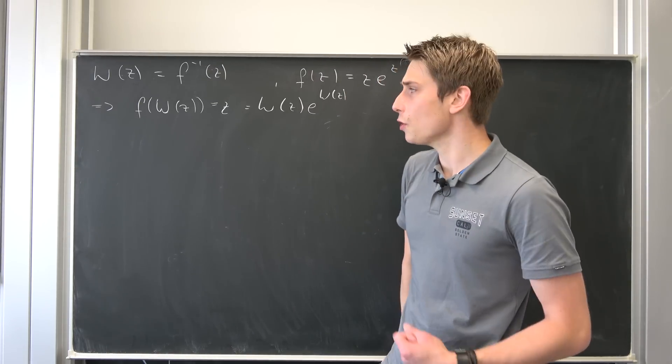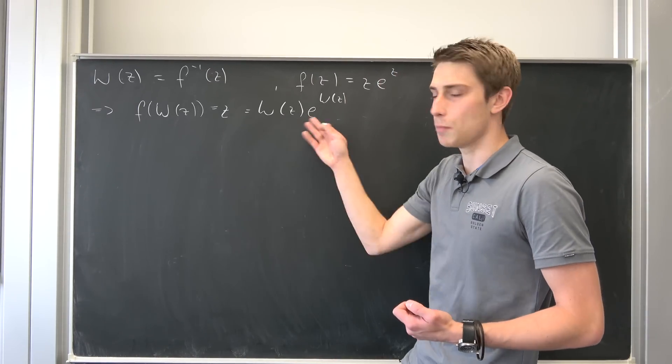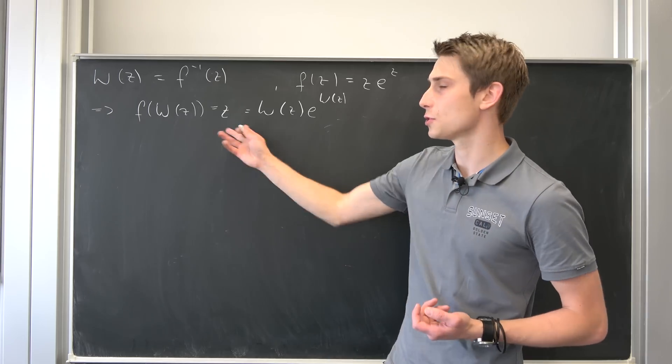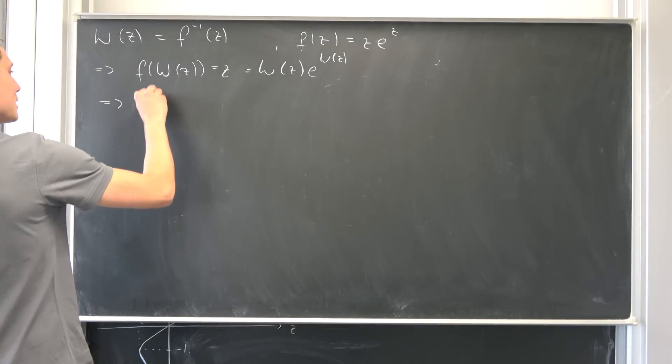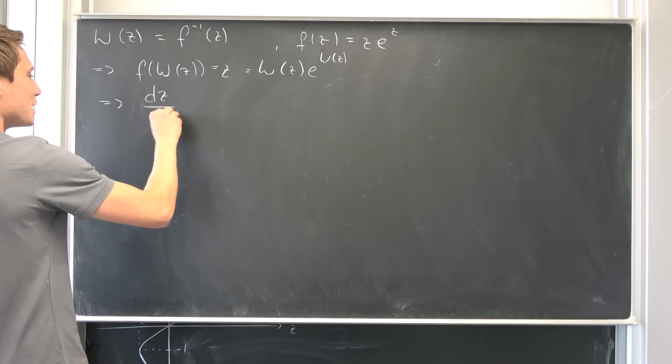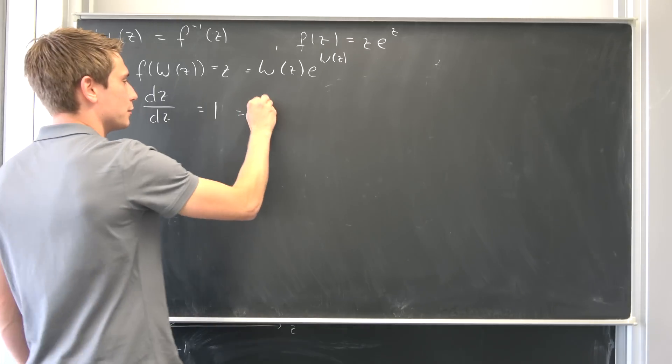And just like I said before, we would like to do implicit differentiation. That means differentiating both sides with respect to z. So the z differentiated with respect to z is just one. That was quite easy. But we also have this right hand side.